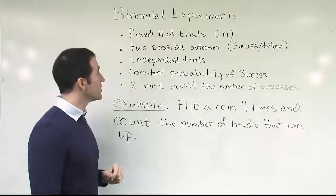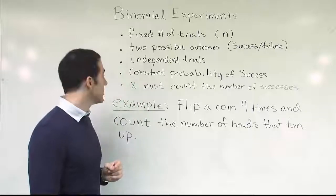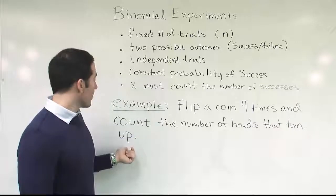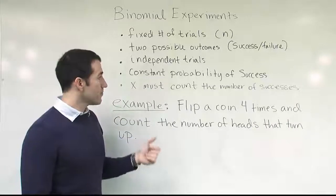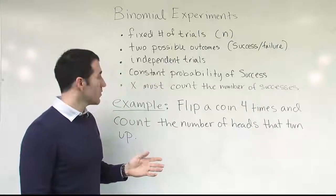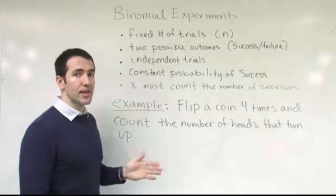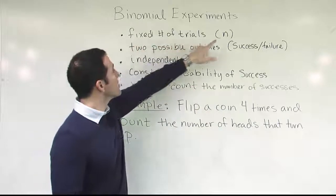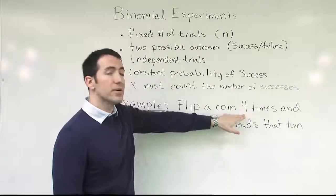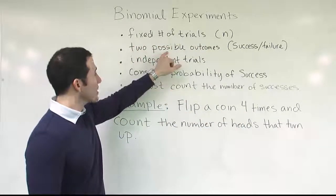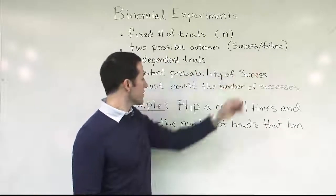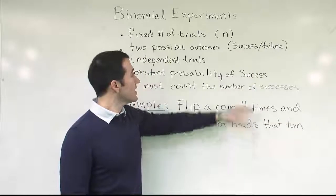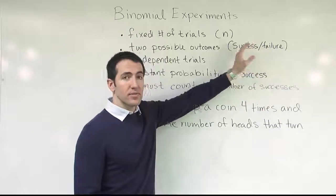Now let's look at this example and see if it corresponds to a binomial experiment: flip a coin four times and count the number of heads that turn up. I'm going to flip the coin four times, so I have a fixed number of trials — n equals four. There are two possible outcomes, heads or tails — success or failure. In this case, success is defined as heads and failure as tails. So we have two possible outcomes.